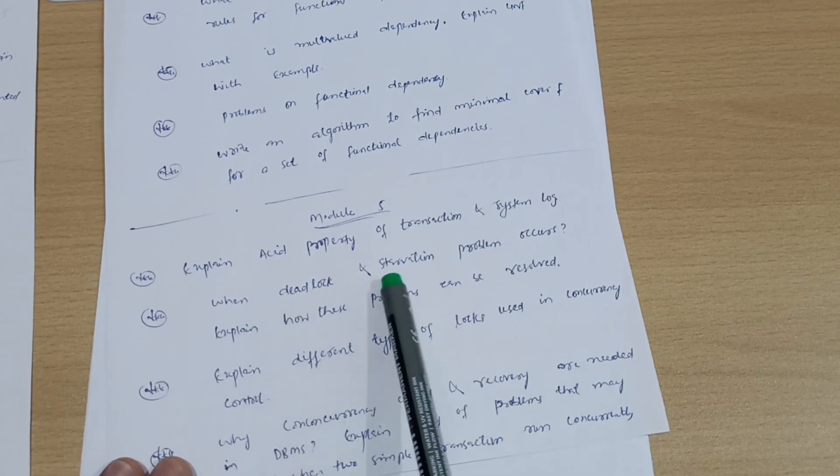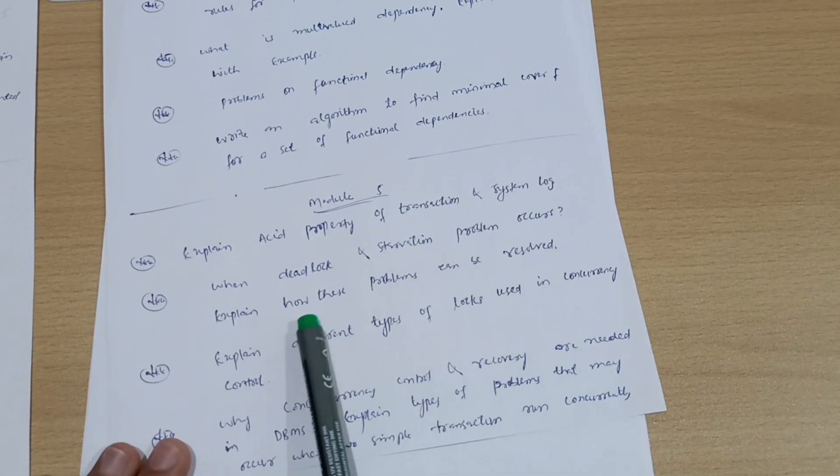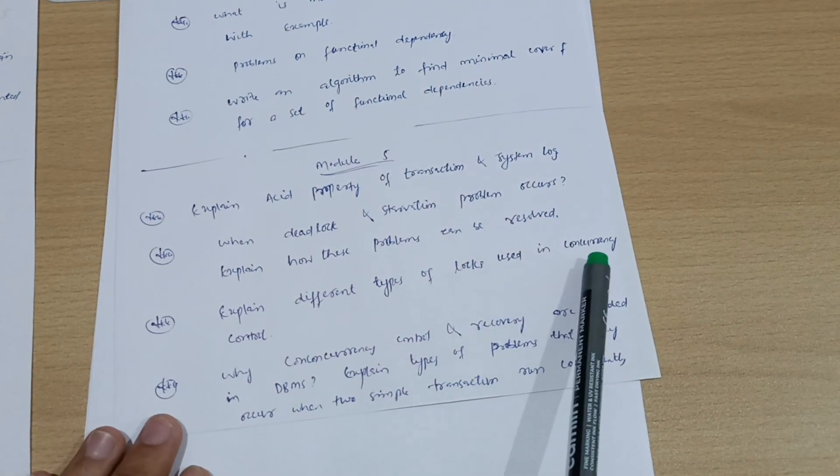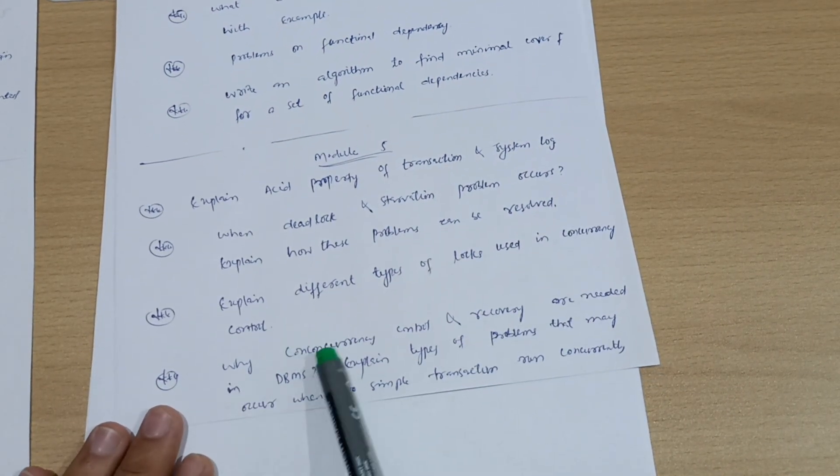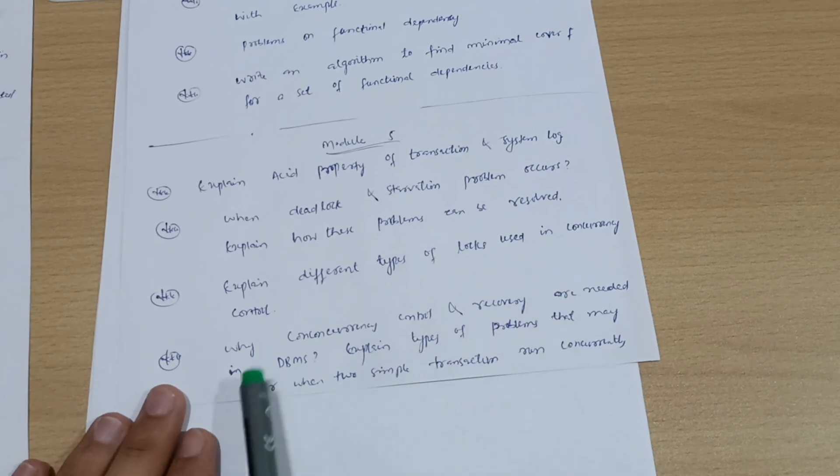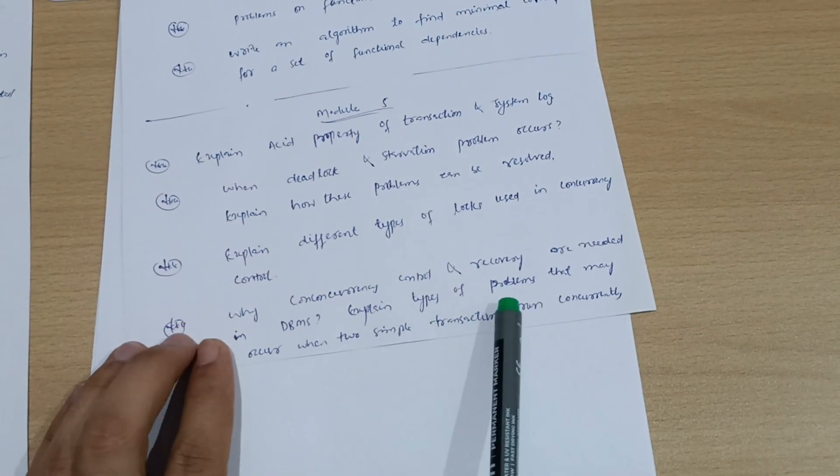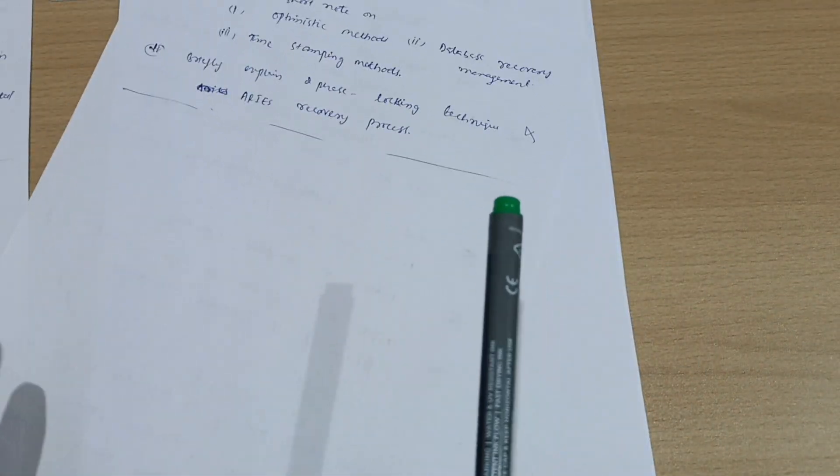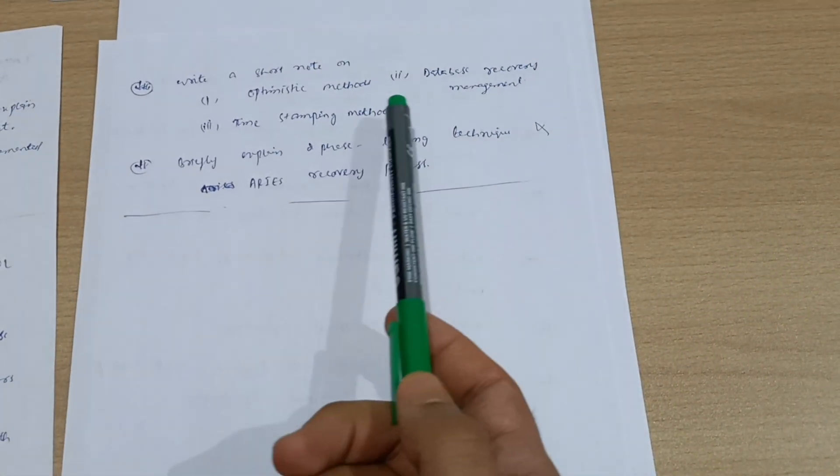Module 5: Explain ACID properties of transactions and system log. When deadlock and starvation problems occur, explain how these can be resolved. Explain different types of logs used in concurrency control. Why are concurrency control and recovery needed in DBMS? Explain types of problems that may occur when two transactions run concurrently.